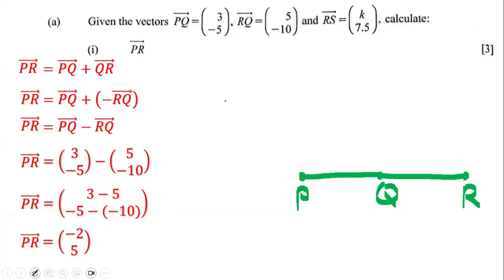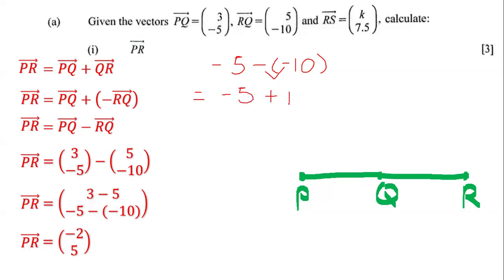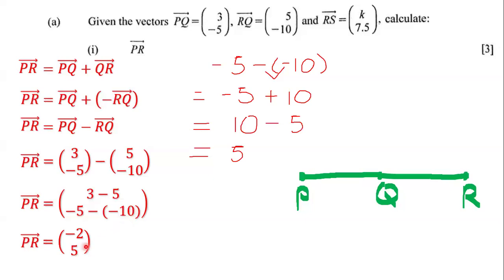For negative 5 minus negative 10: a negative multiplied by a negative is a positive, so we have negative 5 plus 10. We can rewrite that as 10 minus 5, which equals 5. So negative 5 minus negative 10 equals 5. Therefore PR is equal to (-2, 5).